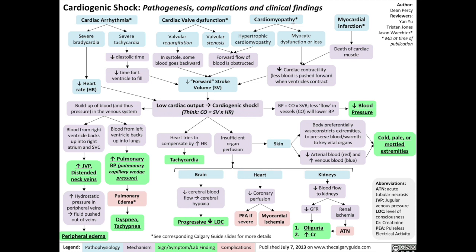The third group of causes is cardiomyopathies. In hypertrophic cardiomyopathy, like valvular stenosis, the forward flow of blood is obstructed, reducing stroke volume and reducing cardiac output. In other cardiomyopathies, myocyte destruction or loss results in reduced cardiac contractility, which is basically the ability of ventricles to push blood forward when they contract. This results in reduced stroke volume and reduced cardiac output.